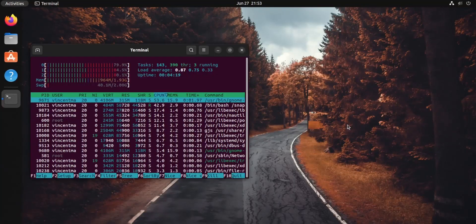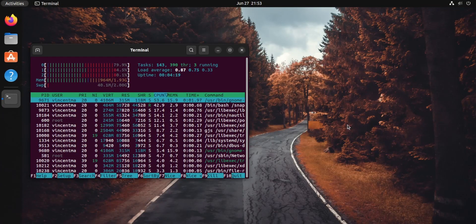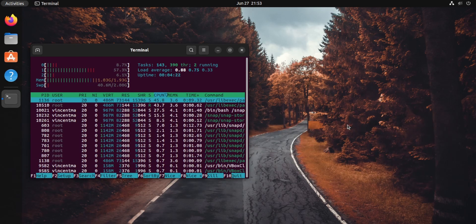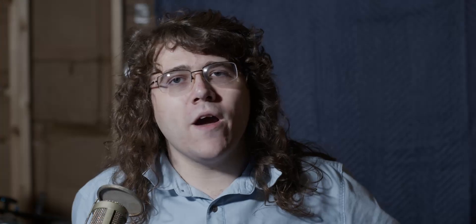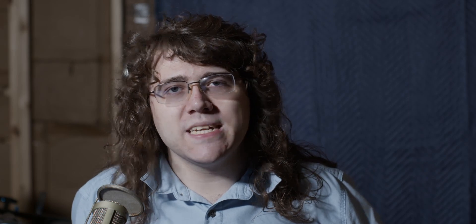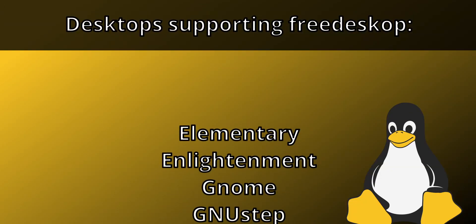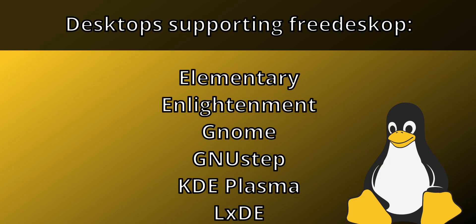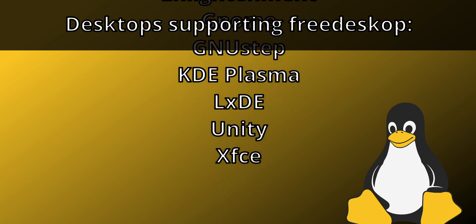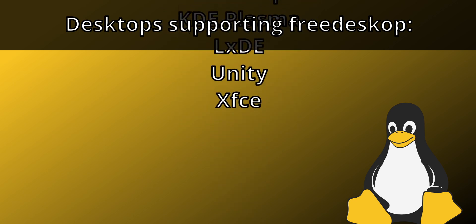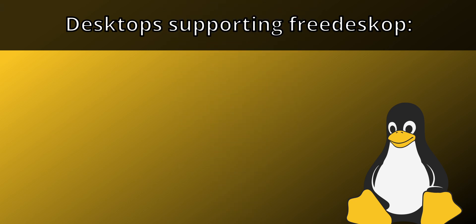And there you go. You can just use chmod plus x with the file name, and you're good to go. Once you do this, you're going to be able to boot your Linux install up and log in to the desktop environment of your choice — pretty much any of them — and then you're going to be able to get that application to auto-start.